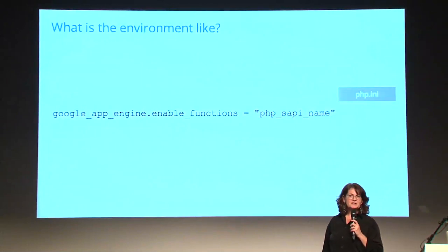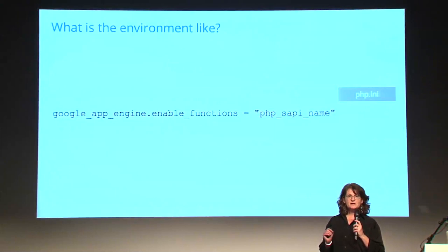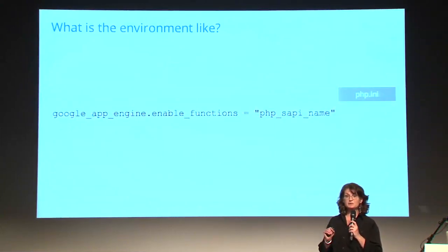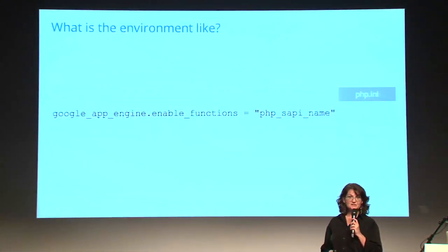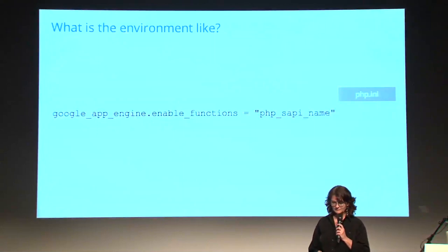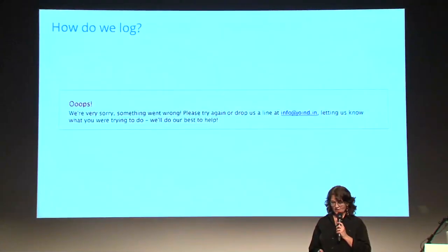One other thing needed for Joind.in is a PHP.ini file in the same root directory. This is because we need to enable a function that App Engine has disabled by default — something that CodeIgniter needs enabled.